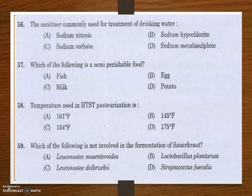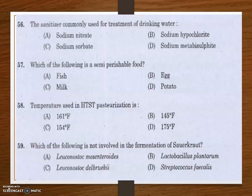Next question: the sanitizer commonly used for treatment of drinking water. Options are sodium nitrate, sodium hypochlorite, sodium sorbate, and sodium metabisulfite. The answer is sodium hypochlorite (NaOCl). It is used for water purification, large-scale surface purification, bleaching, odor removal, and water disinfection.